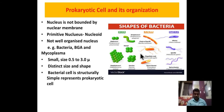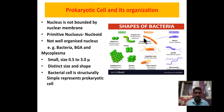There are four basic forms of bacteria. The picture shows these bacterial forms: bacillus, coccus (spherical), vibrio, and spirilla.